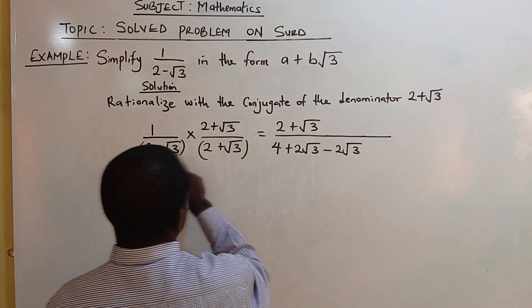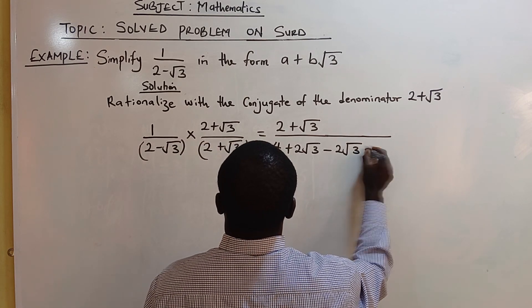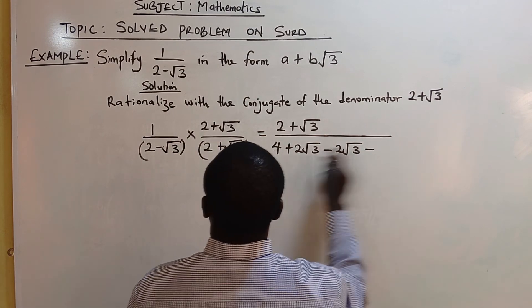Minus root 3 times plus root 3: negative times positive gives you negative root 3 times root 3, which equals root 9.